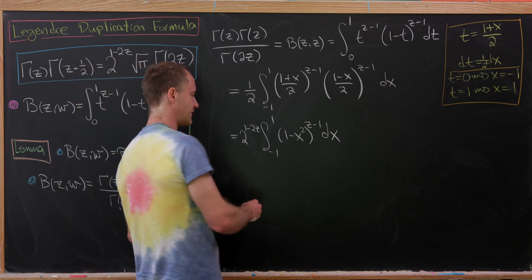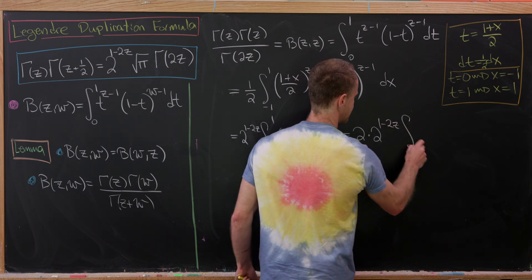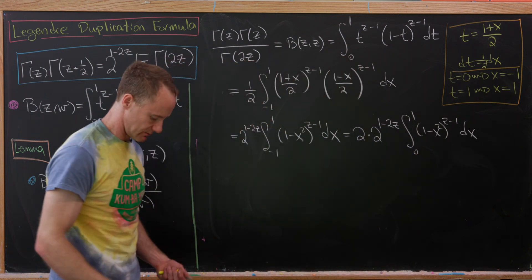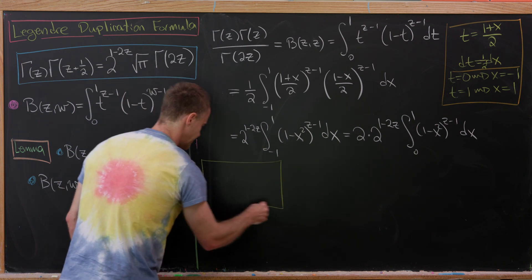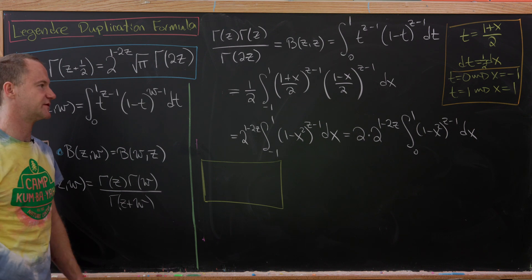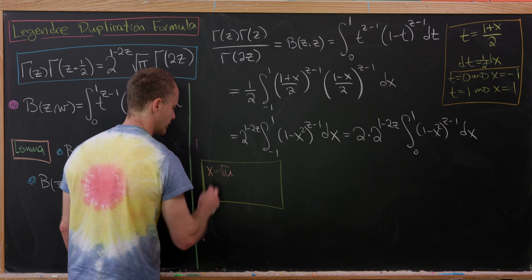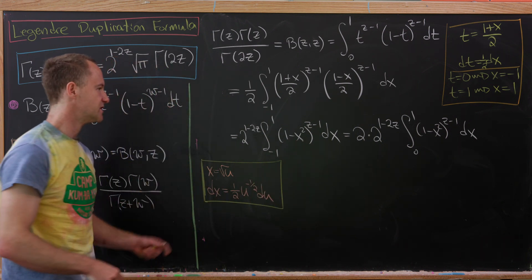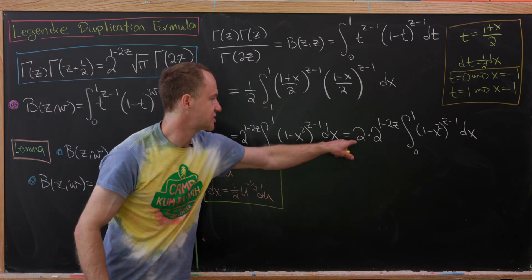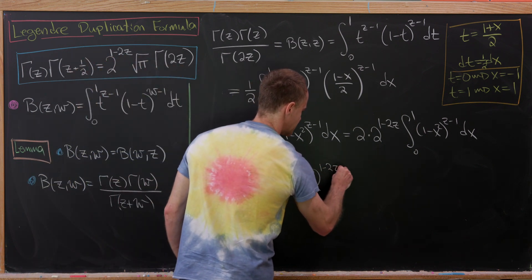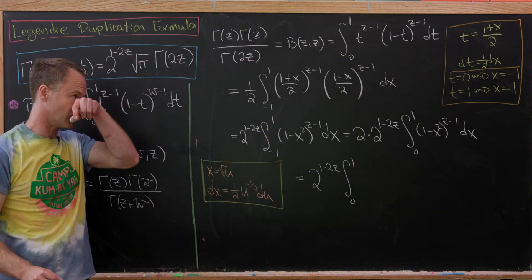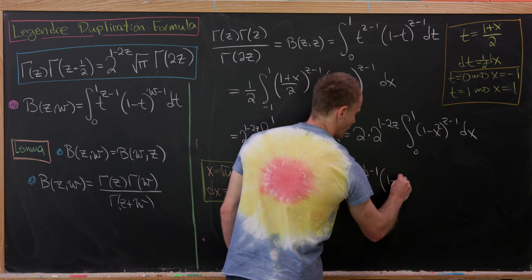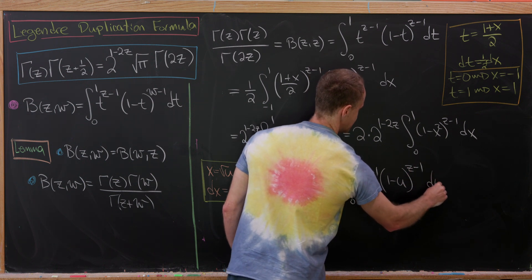Using the fact that (1-x²)^(z-1) is an even function, we rewrite this as 2 · 2^(1-2z) times the integral from 0 to 1 of (1-x²)^(z-1) dx. We then substitute x = √u, so dx = (1/2)u^(-1/2) du. The factor of 1/2 cancels the 2 out front, leaving 2^(1-2z) times the integral from 0 to 1 of u^(1/2-1)(1-u)^(z-1) du.